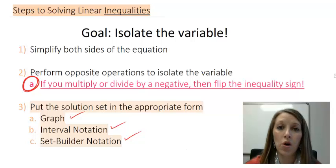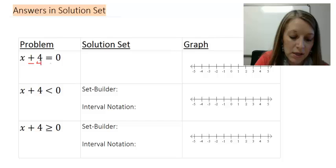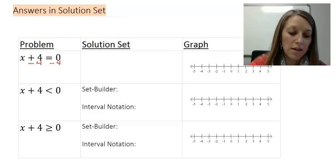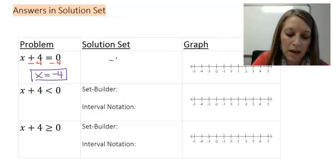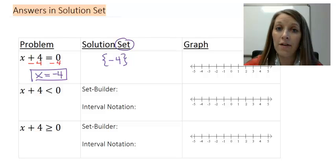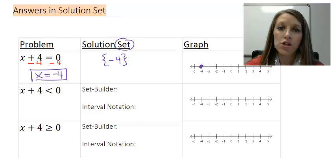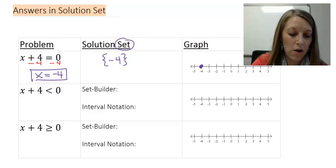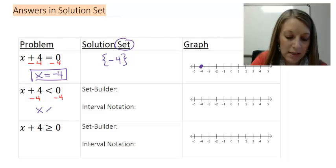Let's review what an answer might look like with three different problems. Starting with x plus 4 equals 0: subtracting 4 from both sides gives x equals negative 4. The solution is negative 4, or in a solution set, we put it in braces. Graphed, it's one specific point at negative 4. Now for x plus 4 is less than 0: solving the same way gives x is less than negative 4.